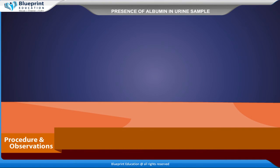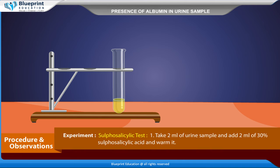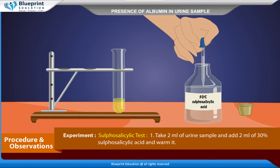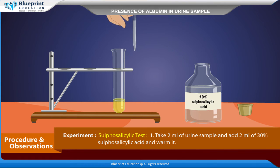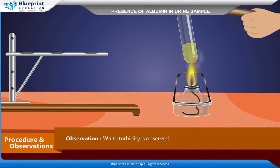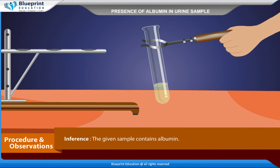Procedure and Observations. Experiment 1 - Sulfo-Salicylic Test: Take 2 ml of urine sample and add 2 ml of 30% sulfo-salicylic acid and observe. Observation: White turbidity is observed. Inference: The given sample contains albumin.